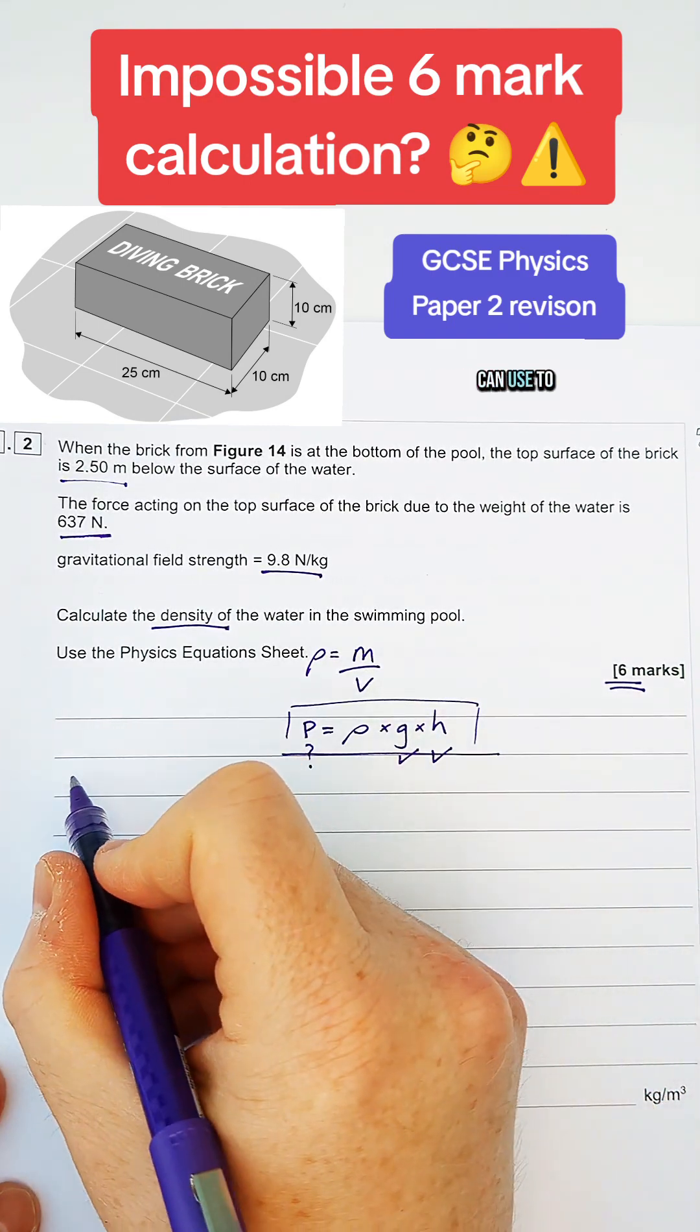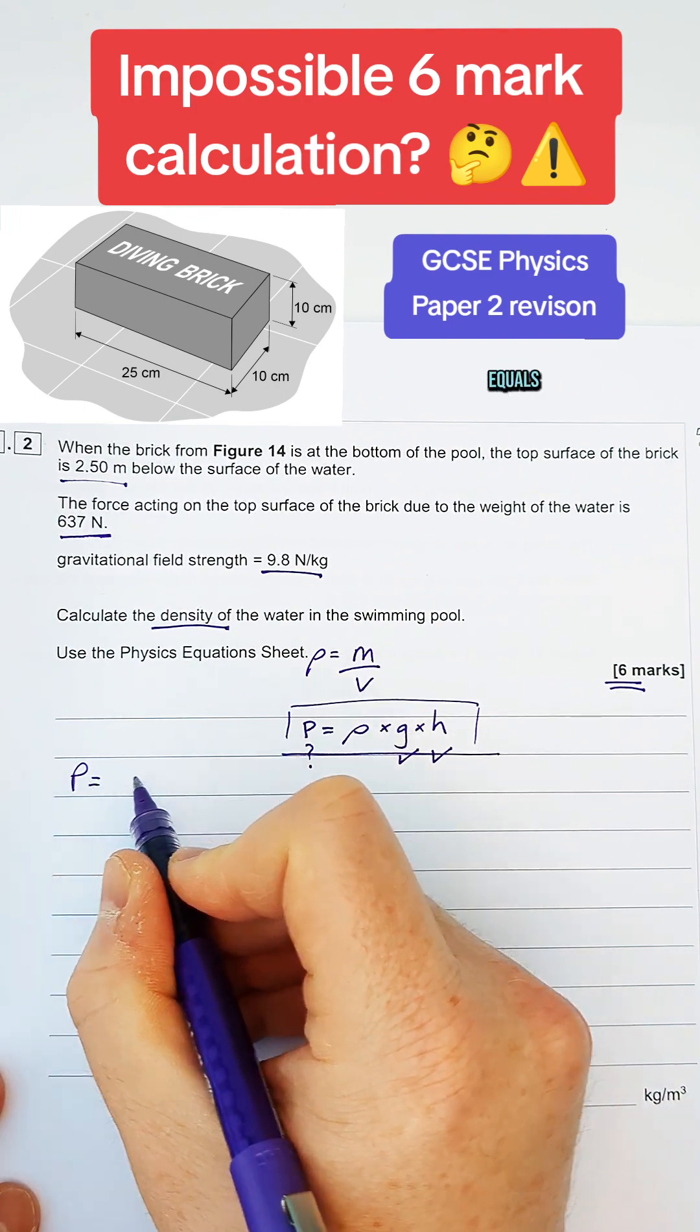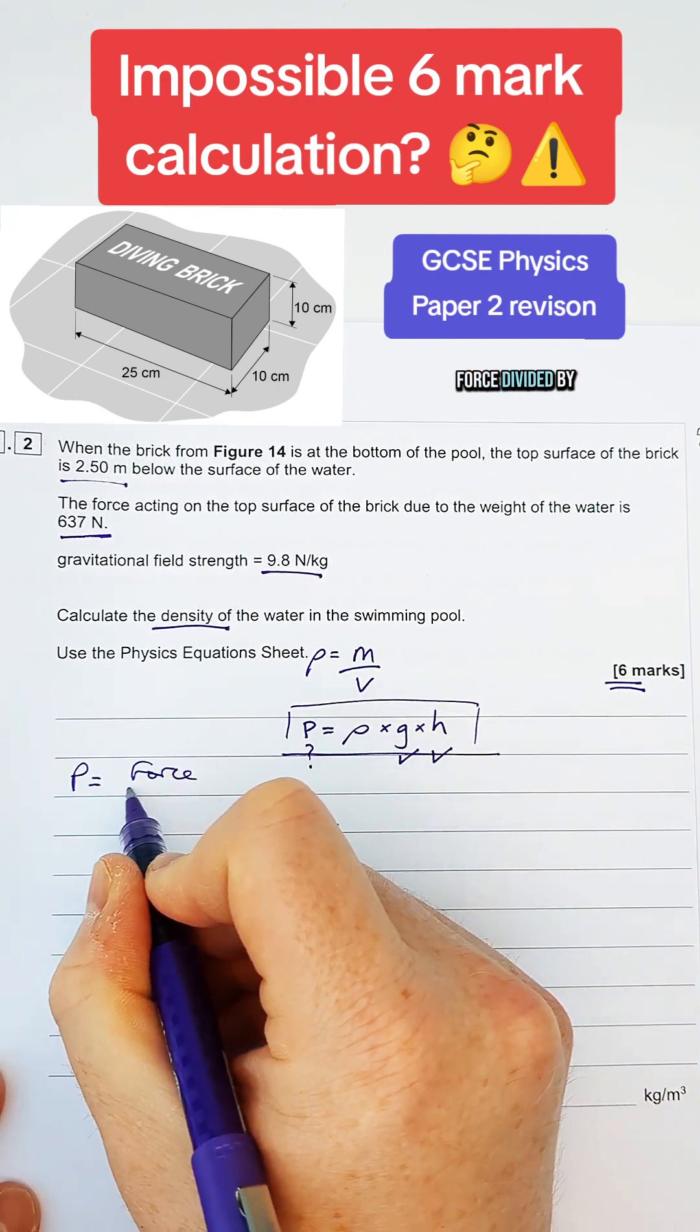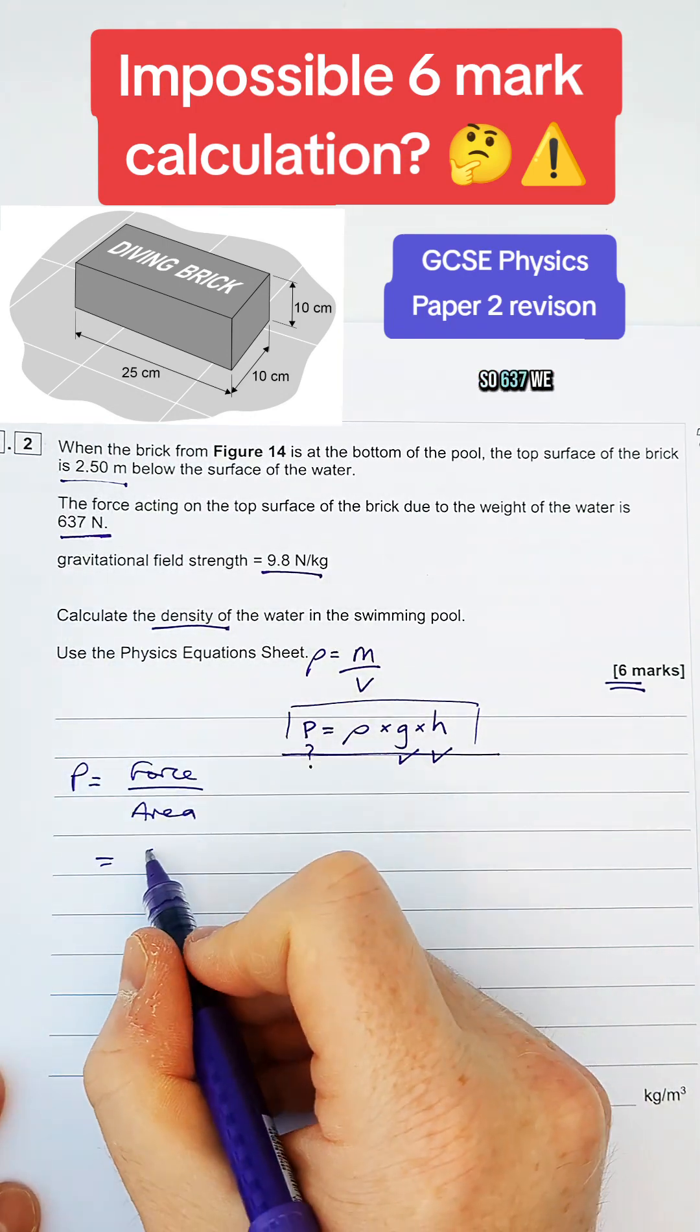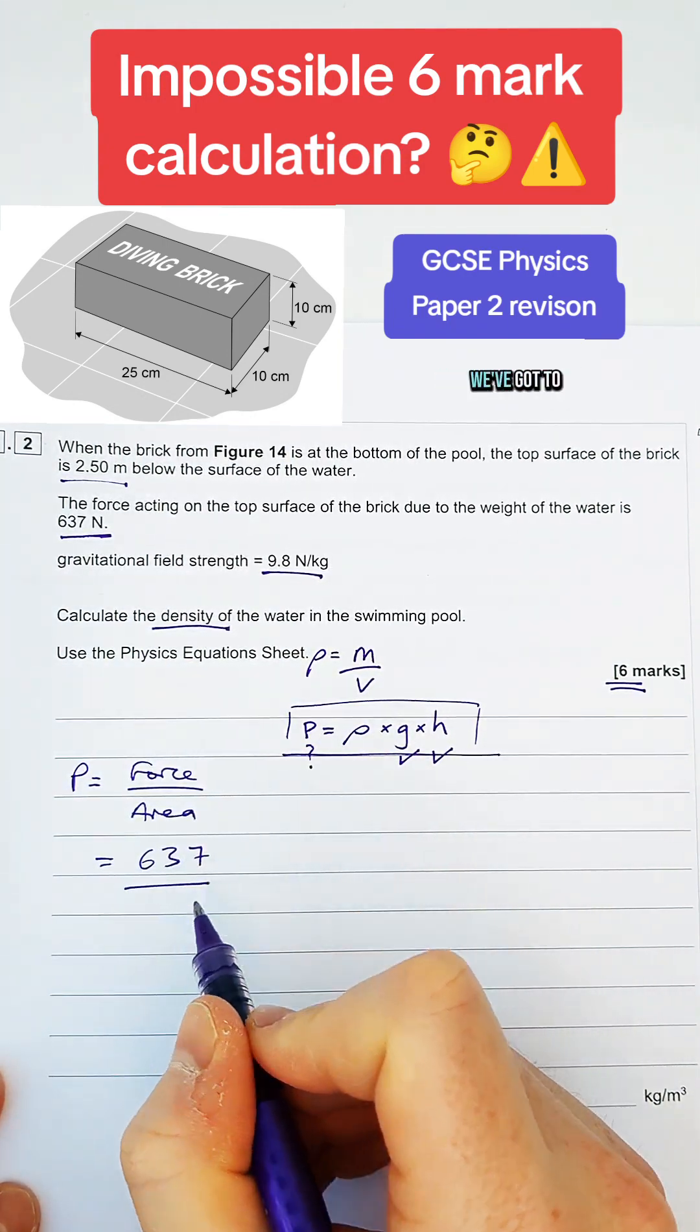So there's one equation you can use to find the pressure, which is pressure equals force divided by area. Now, if I was to use the force, so 637, we don't have the area. We've got to work that out.